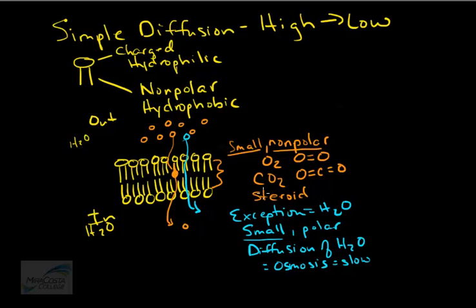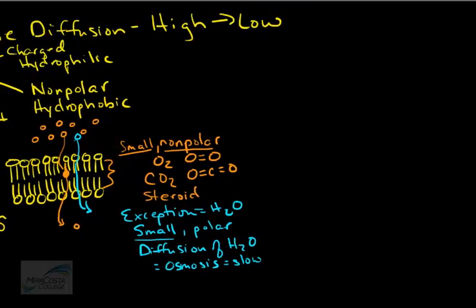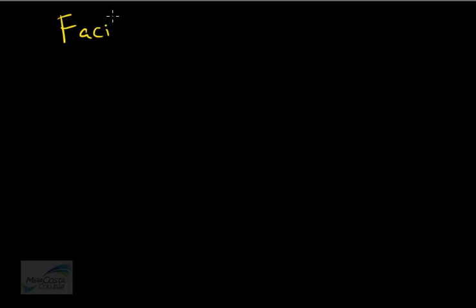What about substances that are not small and non-polar — things like charged ions or polar molecules like glucose or amino acids? How do they get through the cell membrane? Those substances require assistance; their transport through the membrane has to be facilitated. This form of transport is referred to as facilitated diffusion.